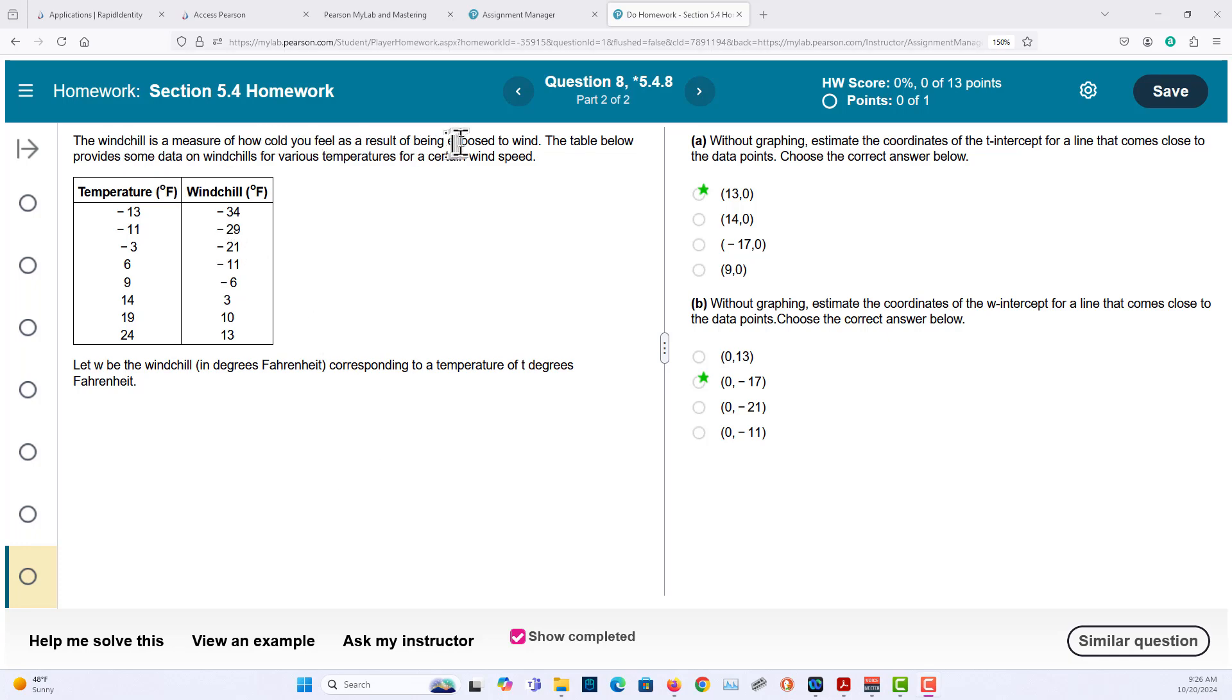The wind chill is a measure of how cold you feel as a result of being exposed to the wind. The table below provides some data on wind chills for various temperatures for a certain wind speed. Part A.